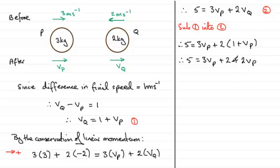So we could subtract 2 from both sides and we therefore have got 5 take 2 which is 3 and then we've got 3VP plus another 2VP which is 5VP. So if we divide both sides now by 5 we've got VP equals 3 fifths. 3 fifths meters per second then for the final velocity of P.